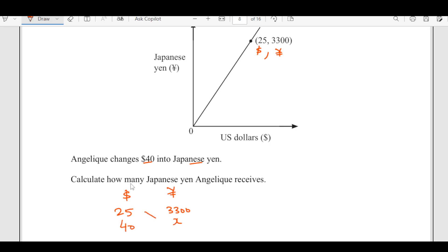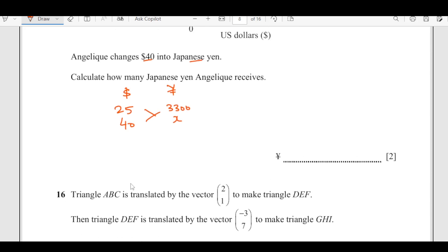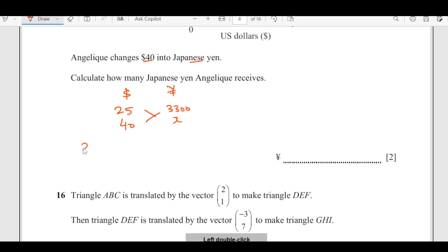I just cross multiply over here. That gives us x times 25 equals to 3300 times 40, then divide by 25, this goes and you are left with 5280.